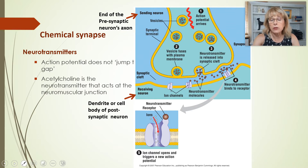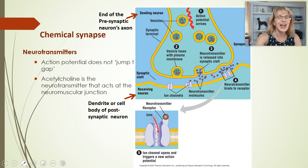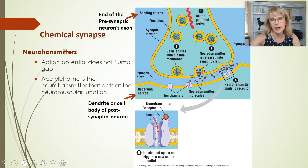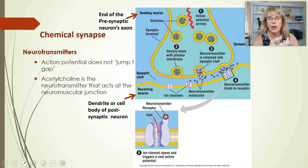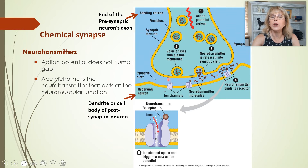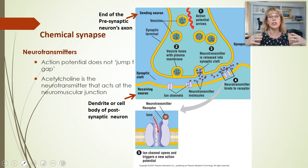Graded potentials can be small or big. A graded potential will be small if just a few ligand-gated channels open — they'll let a little bit of ions into the cell, changing the electricity across the membrane only slightly. That's a small graded potential. When lots of action potentials arrive and release a lot of neurotransmitter, they open a lot of channels, a lot of ions enter the cell, and the electricity changes by a lot — giving you a big graded potential.